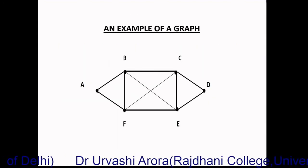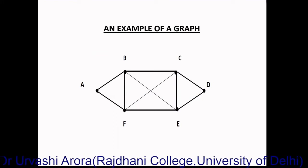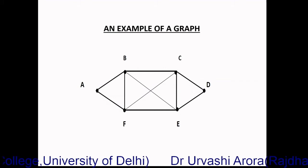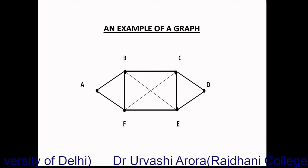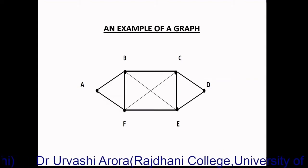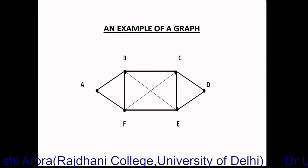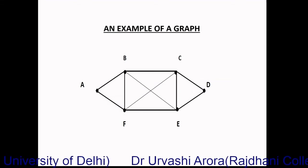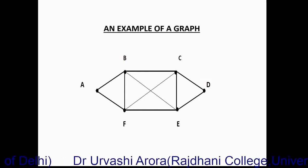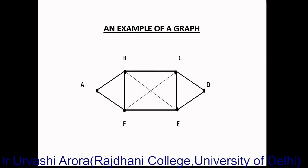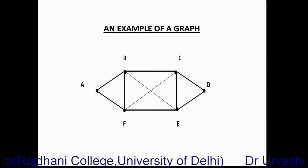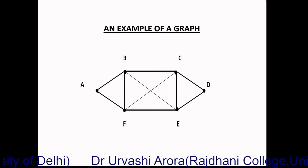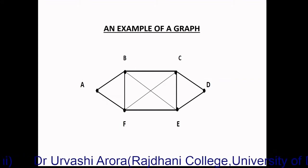Coming to an example of a graph, the following figure is a graph in which there are points and lines. The points are called vertices mathematically and the lines are called edges. In this particular graph, there are six vertices labeled A, B, C, D, E, F, and there are lines joining these points which are the edges. For example, there is a line joining vertex A and vertex B, which is an edge. Similarly, vertex B and vertex C are joined by an edge, and likewise we have different edges and vertices in this graph.